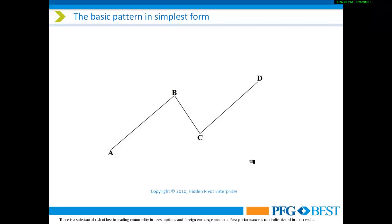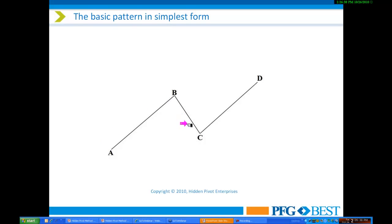Once again, this is that basic ABCD pattern. As mentioned earlier, we have simply an AB impulse leg, a pullback from B to C, and a secondary CD follow-through leg. We're going to delve into this just a little bit further.